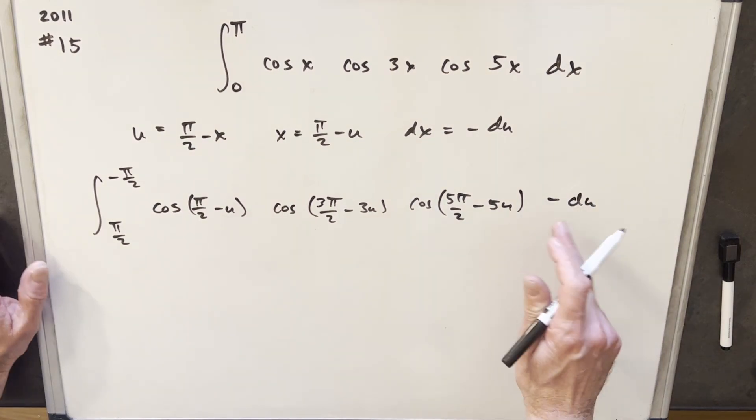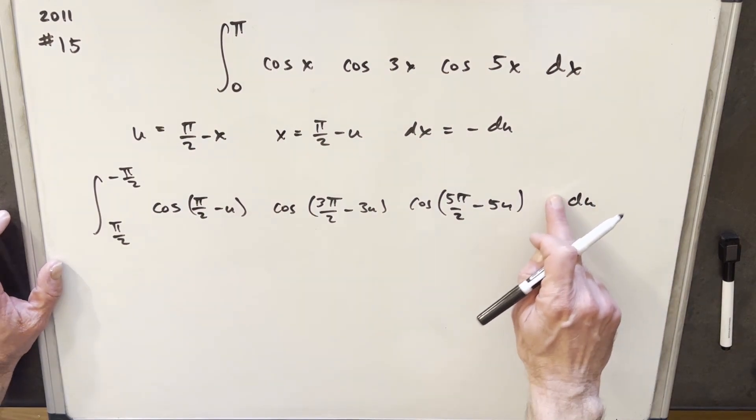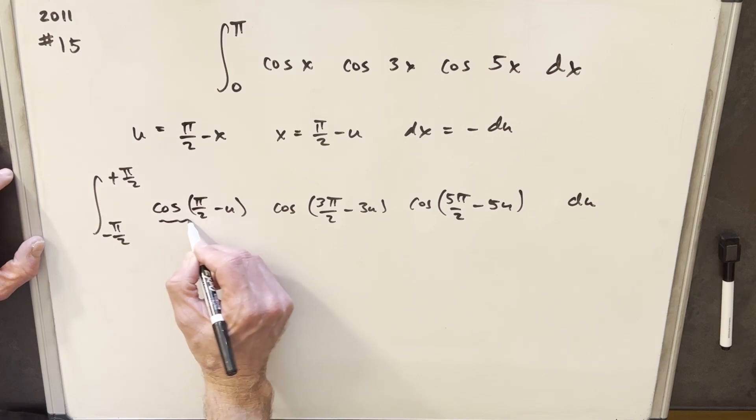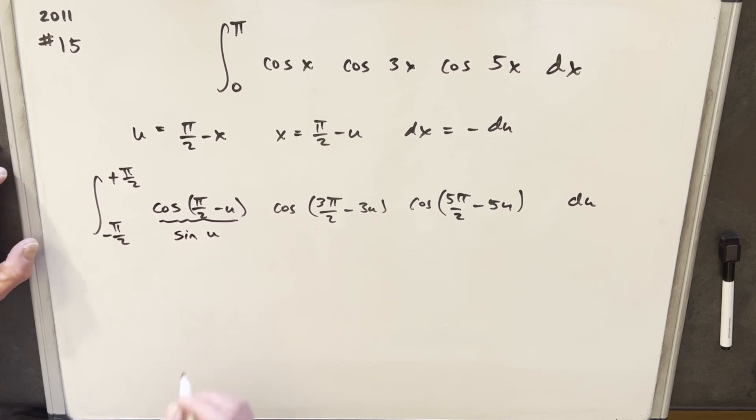And what I want to do with this minus, let's just use this to flip the bounds. What we can do is take that away, change this to a plus, change this to a minus, just flipping these. And then also, this is actually exactly the complementary angle formula right here. So this is the same thing as sine of u.